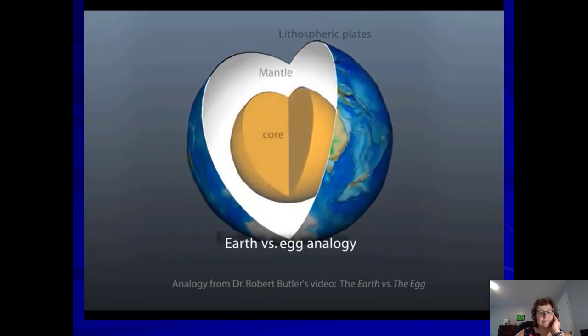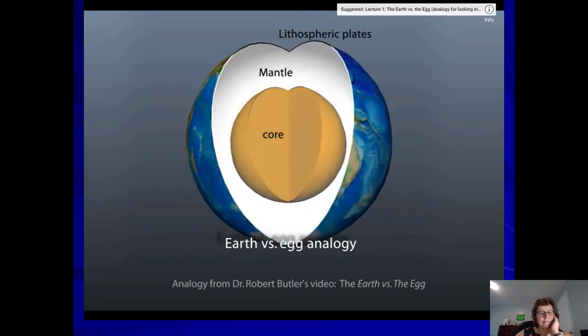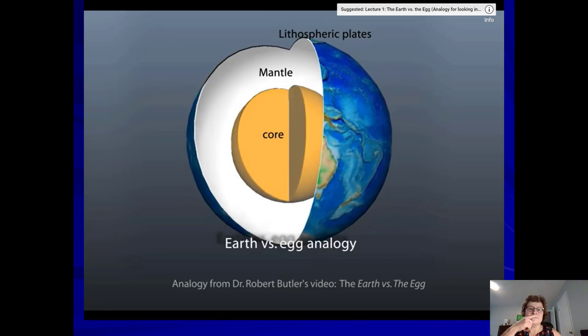As an analogy for relative scale, these layers can be compared to an egg with the shell representing the outermost brittle layer, the white the mantle, and the yolk the core.